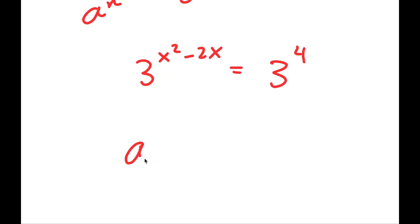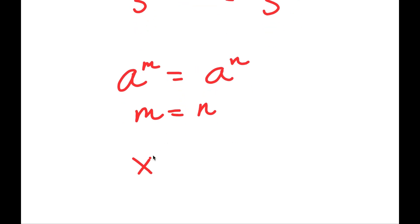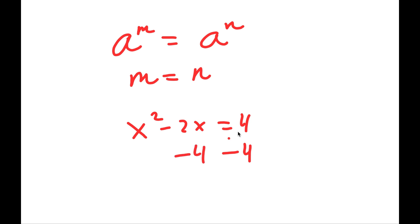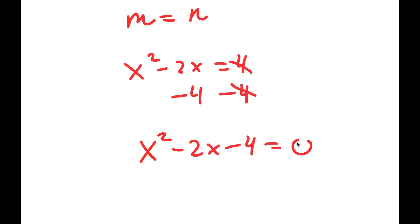Now, if a to the power of m equals a to the power of n, this means m equals n. So this means x squared minus 2x is equal to 4. If I subtract 4 from both sides, I get x squared minus 2x minus 4 is equal to 0.